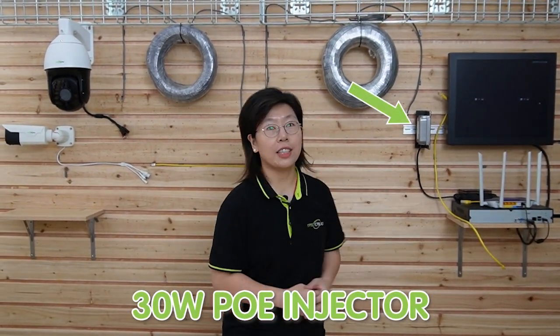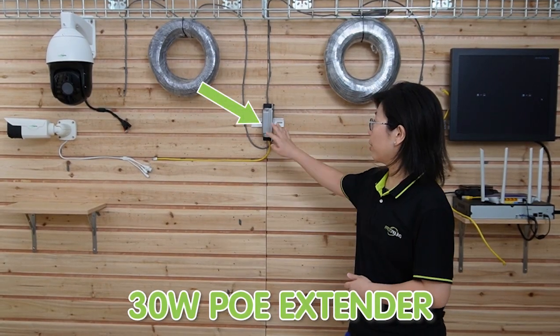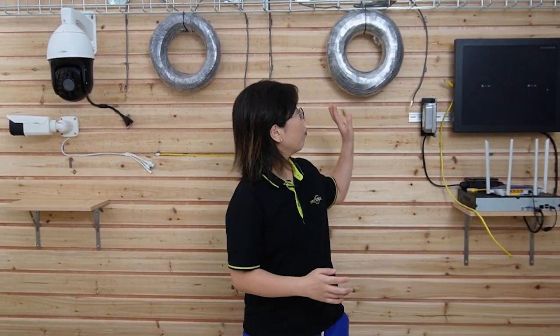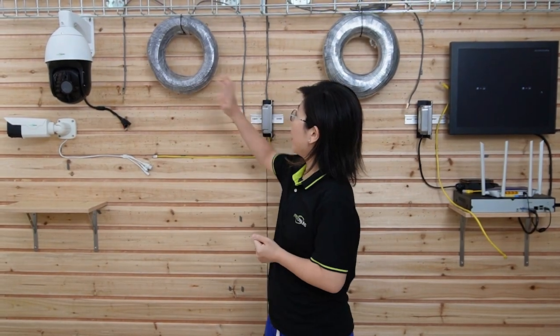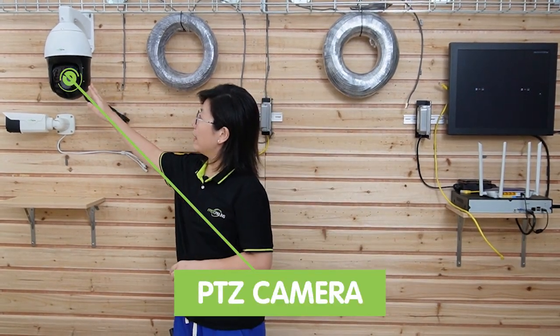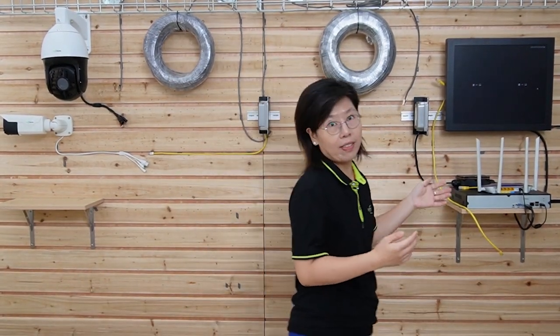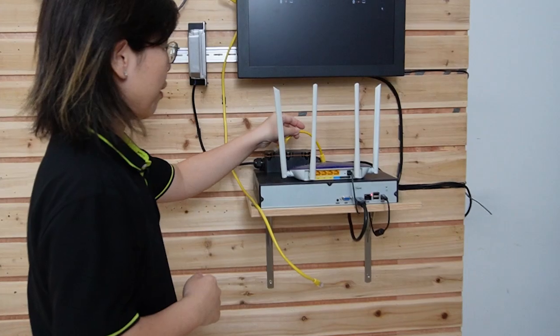So now we're in front of the demonstration board. And I'm going to set up a simple connection using our 30W PoE injector and a 30W PoE extender. As you can see, we have 100 meter Ethernet cable and another 100, so total of 200 meters distance. And we are connecting to a PTZ camera and a bullet camera at the edge. That's why at the front, we have the monitor and the NVR. Let's do the connection together.